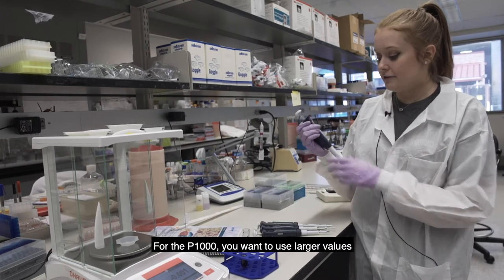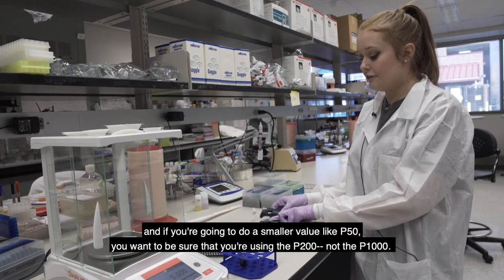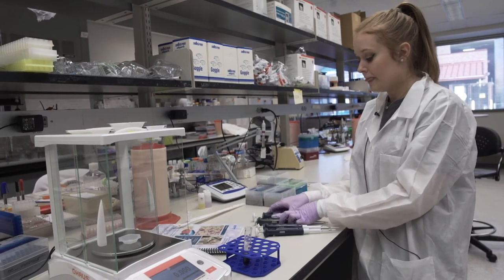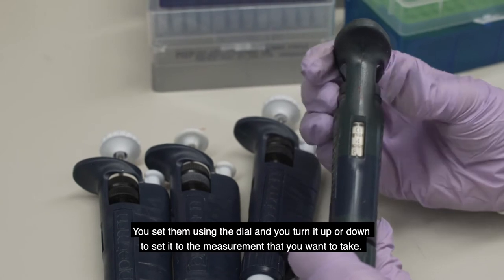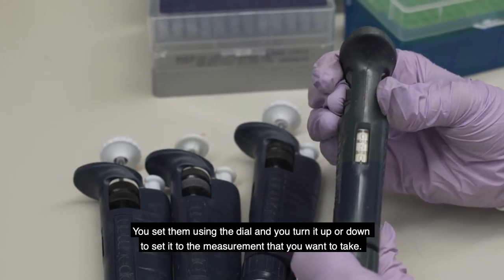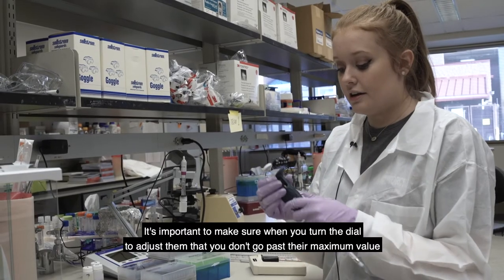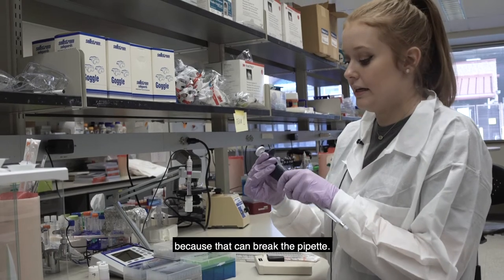For the P1000, you want to do larger values, and if you're going to do a smaller value like 50, you want to be sure that you're using the P200, not the P1000. So you set them using the dial and you just turn it up or down to set it to the measurement that you want to take. So it's important to make sure when you turn the dial to adjust them that you don't go past their maximum value because that can break the pipette.